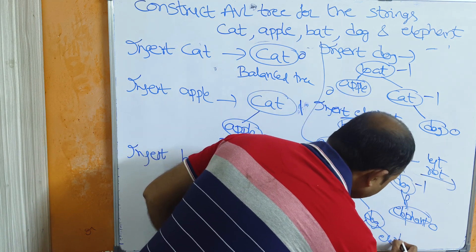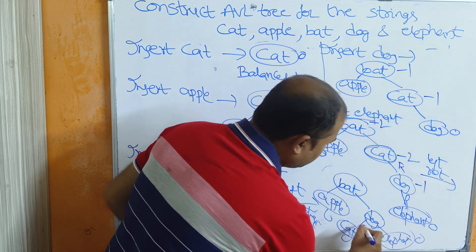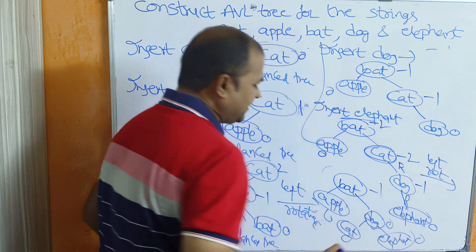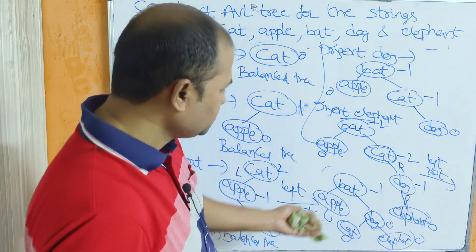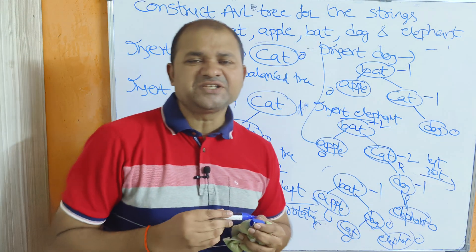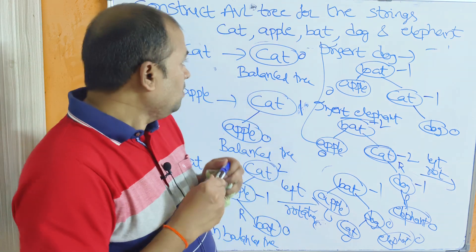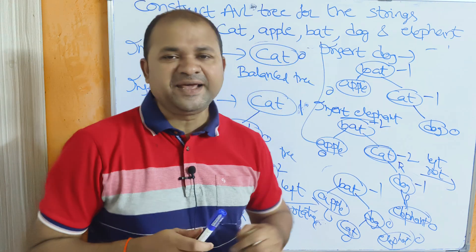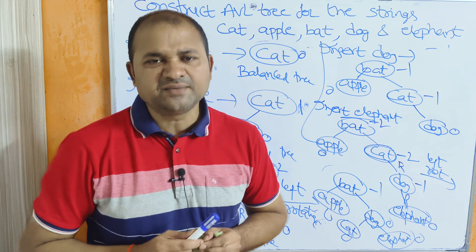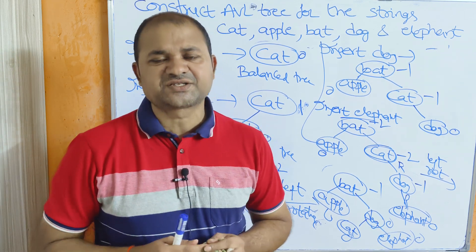Calculating the final balance factors: 0, 0, 0, 0, then 1 minus 1 equals 0, and 1 minus 2 equals -1 — the tree is balanced. Likewise, we can solve any AVL tree problem very easily. Please like the video, subscribe to the channel, and share the channel with your friends.